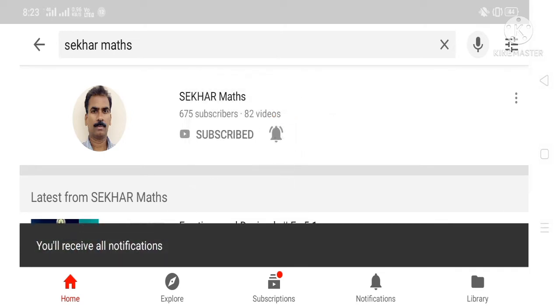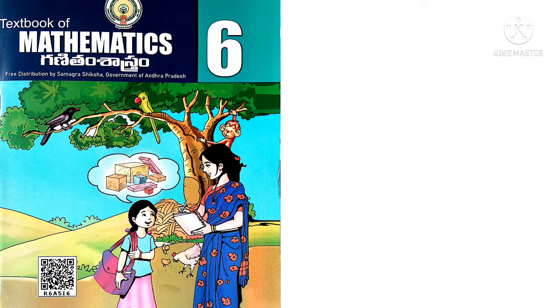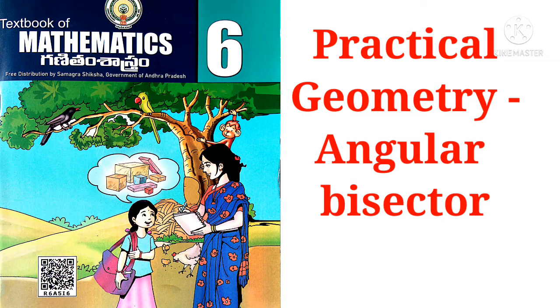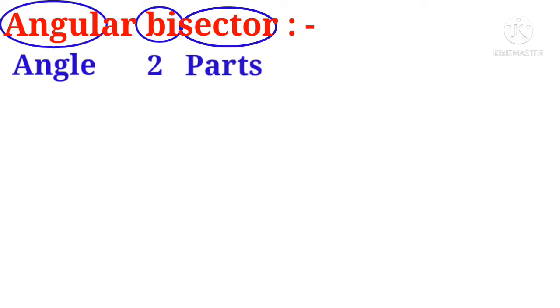Welcome to Sekhar Maths. Today we are going to learn sixth class mathematics, 10th chapter, practical geometry: angular bisector. Hi viewers, I advise you please see this video before the practical geometry exercise 10.3 video. Angular bisector: 'angle' means angle, 'bi' means two sections or parts. That is, a line which divides the given angle into two equal parts is called an angular bisector.